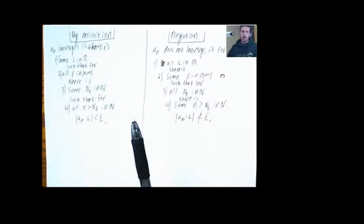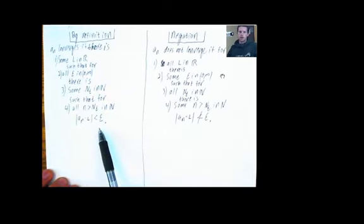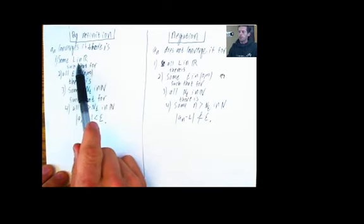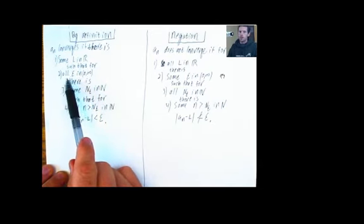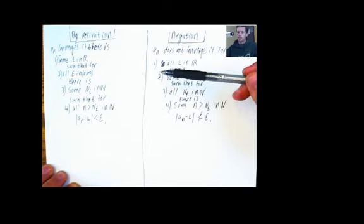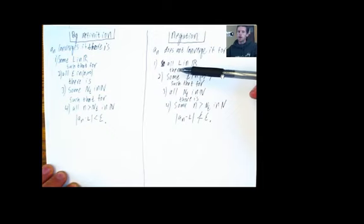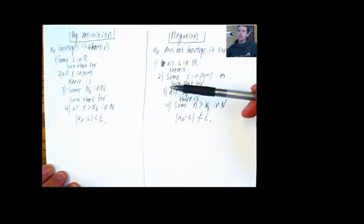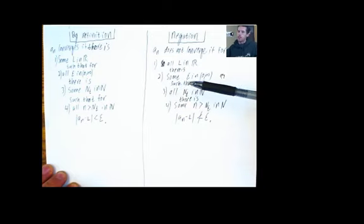Going back to our definition, which is a nested categorical statement, we need to replace all of the 'some' statements with 'all' statements, and all the 'all' statements with 'some' statements. That looks like this: a_n does not converge if, for all L in R, some statement follows. Everything that follows is some property about L. The idea is that for all L, our sequence is not going to converge to L. And then you need to say that for all L, there is some epsilon such that you can't get within epsilon distance of L in the sequence.